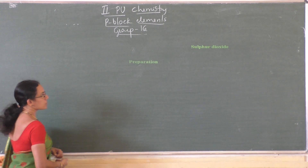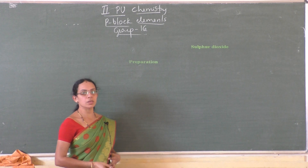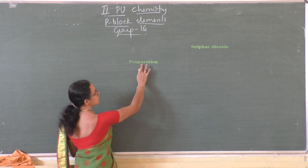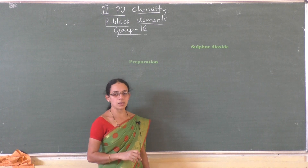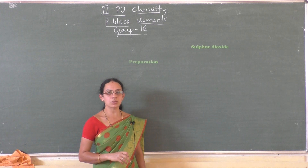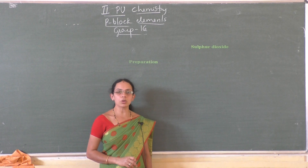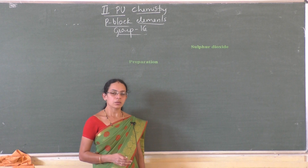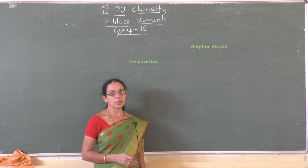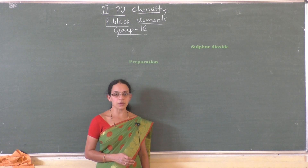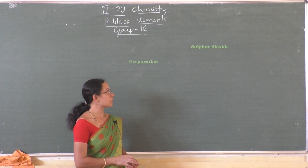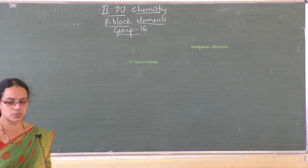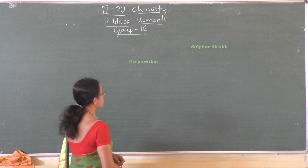The next important compound of sulfur is sulfur dioxide. Sulfur dioxide is a colorless gas with a pungent odor and it is highly soluble in water. It can be liquefied at room temperature by applying pressure. Let us see the preparation of sulfur dioxide.